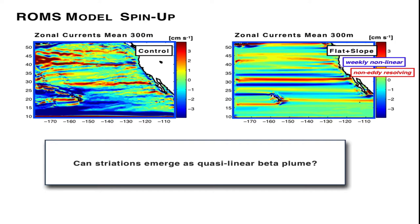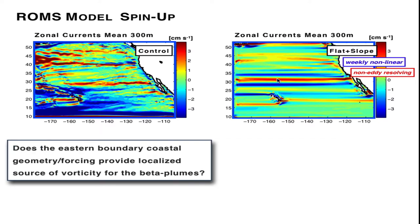However, one important thing is that for the beta plume to survive, you need to have localized vorticity, potential vorticity sources in this case along the eastern boundary, which then get elongated through the beta drift dynamics. The question is, does the eastern boundary coastal geometry and forcing provide localized sources of vorticity for the beta plumes?